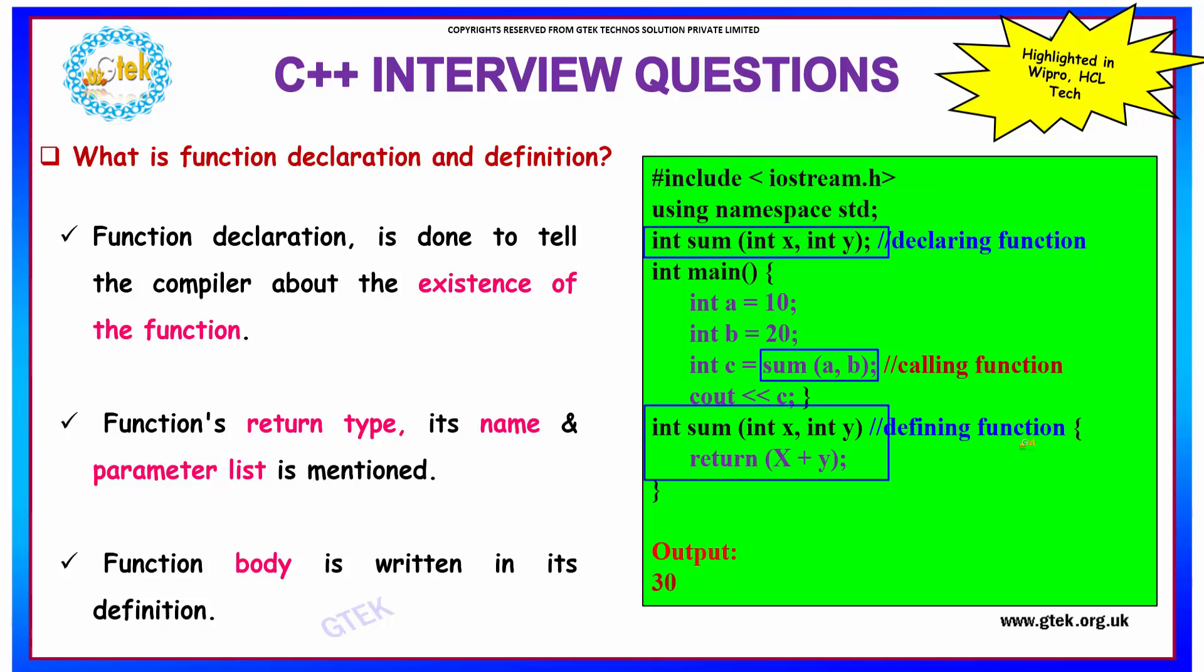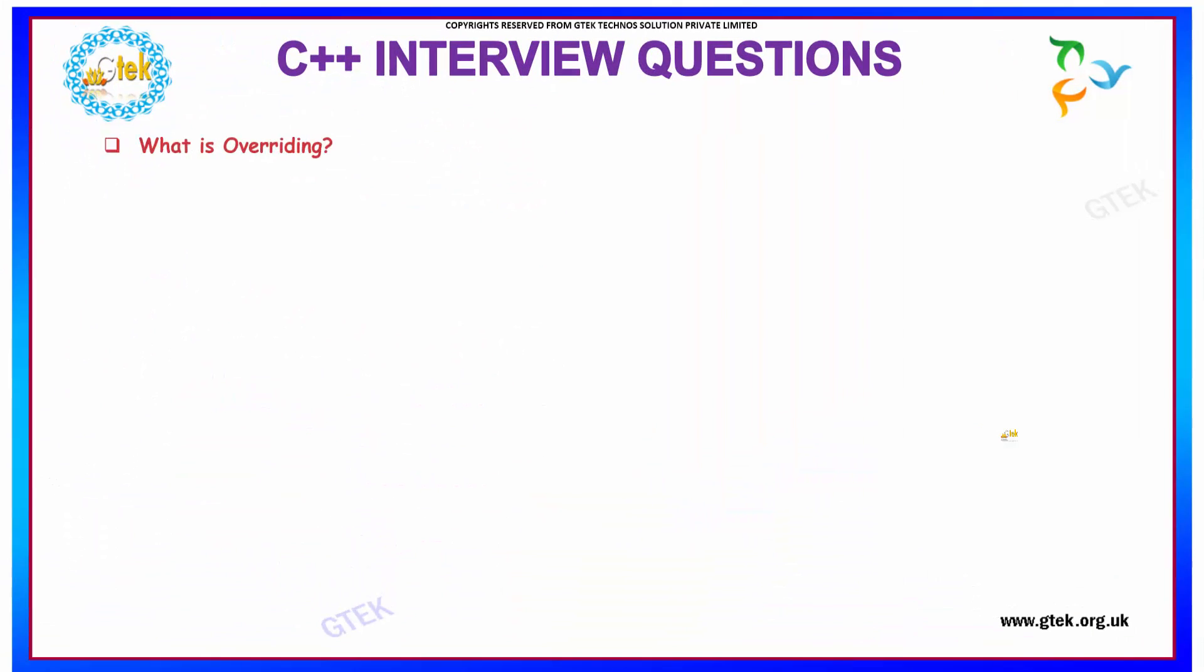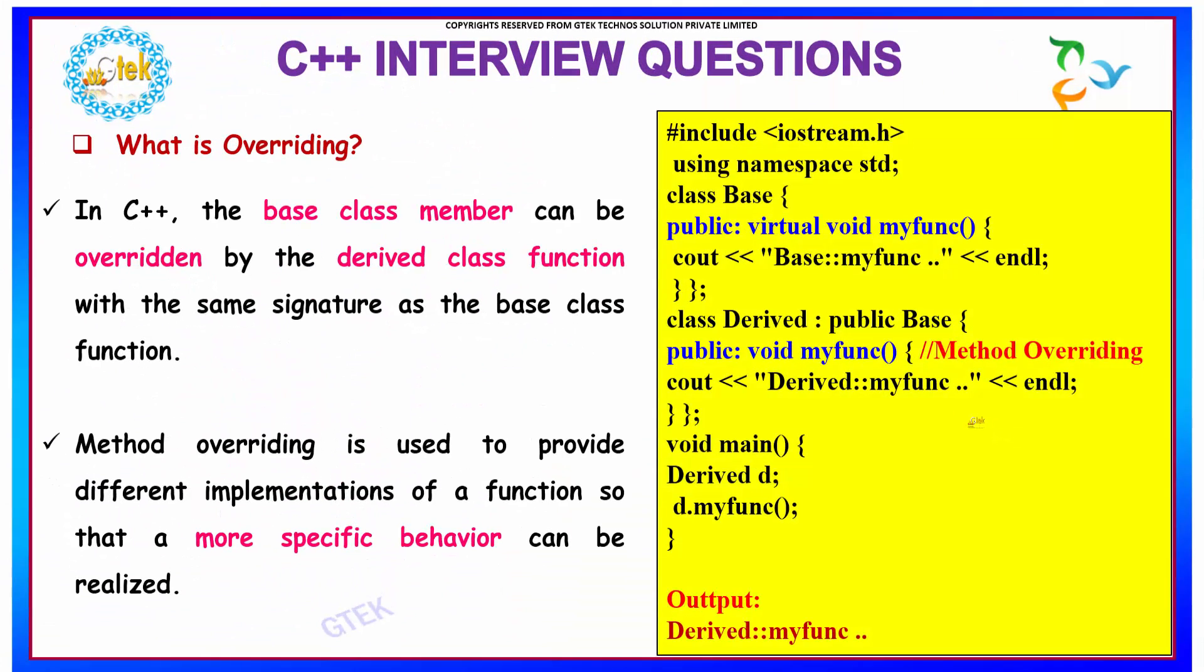The function is called in your program here, sum of a, b, by passing two variables. So this is known as function declaration and definition. Let us move on to our next question.